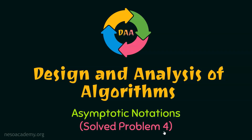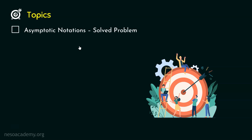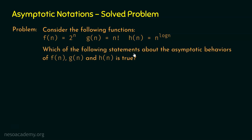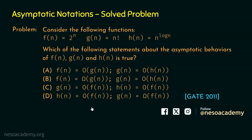Let's solve problem number 4 on asymptotic notations. Consider the following functions: fn is 2 power n, gn is n factorial, and hn is n power log n. Which of the following statements about the asymptotic behaviors of fn, gn, and hn is true? We need to identify which of these statements is true.